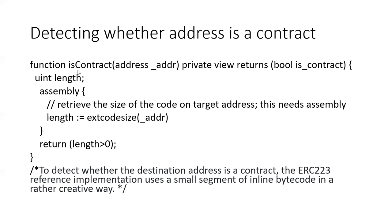If length is greater than zero it's true, meaning it's a contract. If the length equals zero, there's no code at the address and therefore it's not a contract. This is a neat way to detect whether something's a contract. You could also use something like this if you're worried about re-entrancy attacks, to detect whether you're actually sending tokens or ETH to an address versus a wallet versus a contract that could do potentially malicious things.